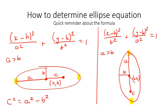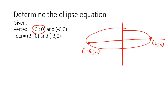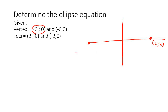Those endpoints on the major axis are called vertices, or each one is a vertex. The endpoints on the minor axis are called co-vertices. Here they're giving us a vertex at (6, 0) and minus (6, 0). Because that's the vertex, we know this is going to be a horizontal ellipse, since the vertex is always on the major axis, and the major one is always the longer one.